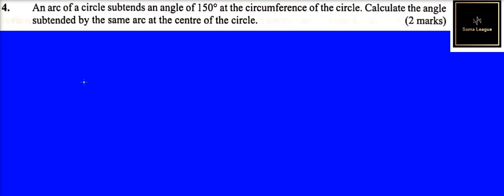Question number 4. We are told an arc of a circle sustains an angle of 150 at the circumference of the circle. Calculate the angle subsided by the same arc at the center of the circle.